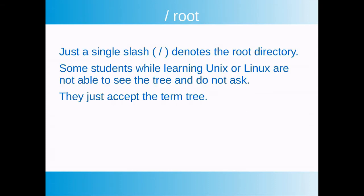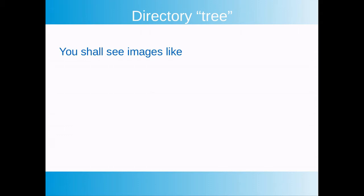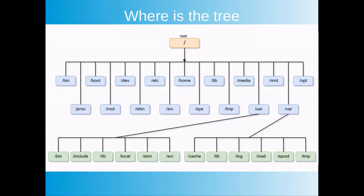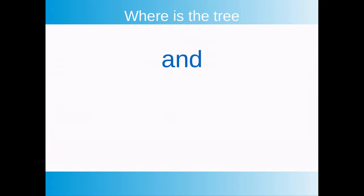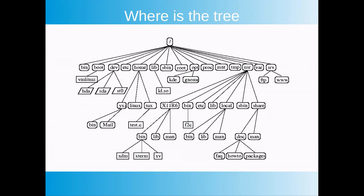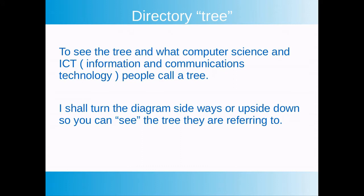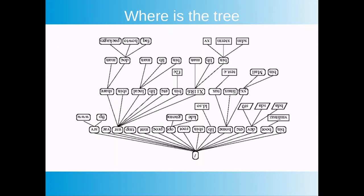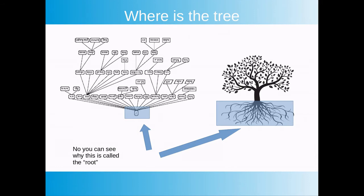A single slash is the name of the root directory, and sometimes when people are learning Unix and Linux they aren't able to see the tree and they just accept the word tree. You will see images in courses like this one. If you can't visualize the tree, I'll turn the diagram upside down so it's easier to see what is meant by a tree. Now you can see the root directory is below and the subdirectories are above it — the slash is the root. The subdirectories presented this way look like the leaves of a tree, with the root represented by the slash.